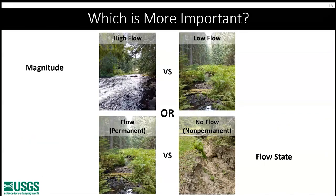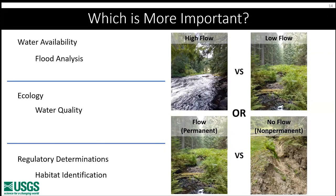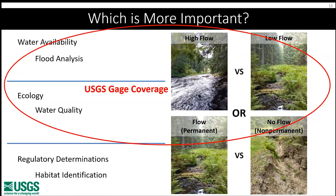We have two competing measurements: the magnitude of flow, and the flow state — whether flow is present or absent. For water availability or flood analysis, knowing the magnitude is more important. For ecology and water quality, both matter. For regulatory determinations and habitat identification, we're more interested in presence versus absence of flow. USGS gauges address the top two but don't provide as well spatially continuous data for that lower presence-of-water classification.